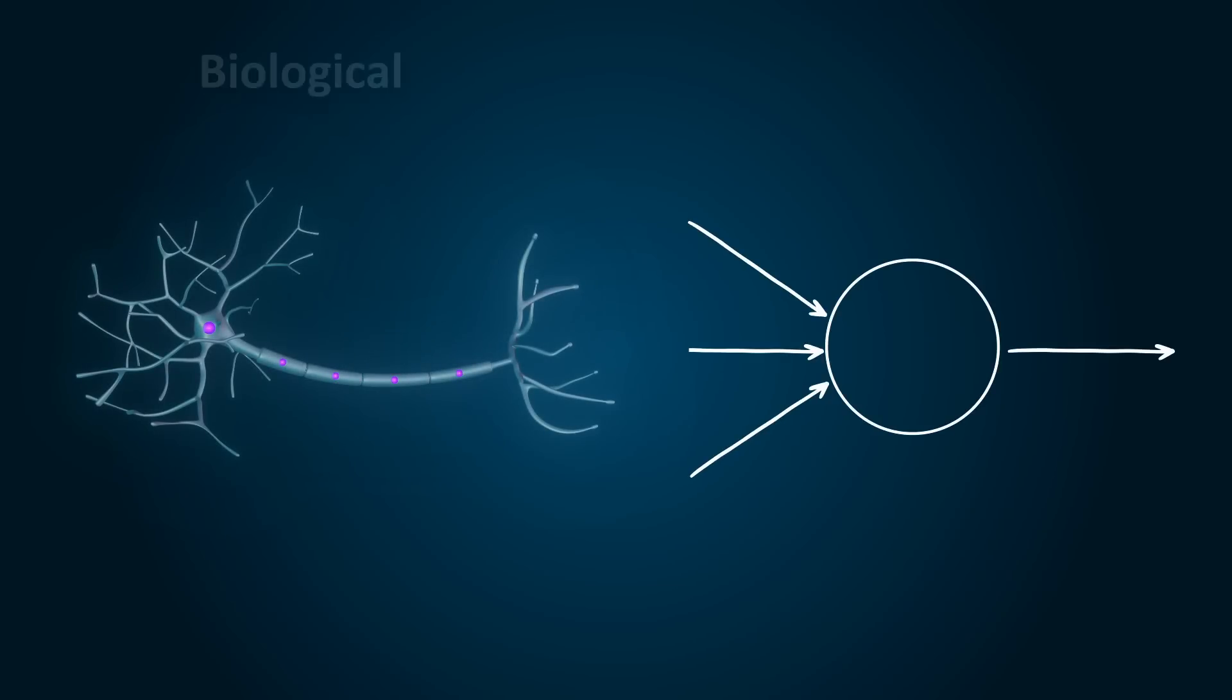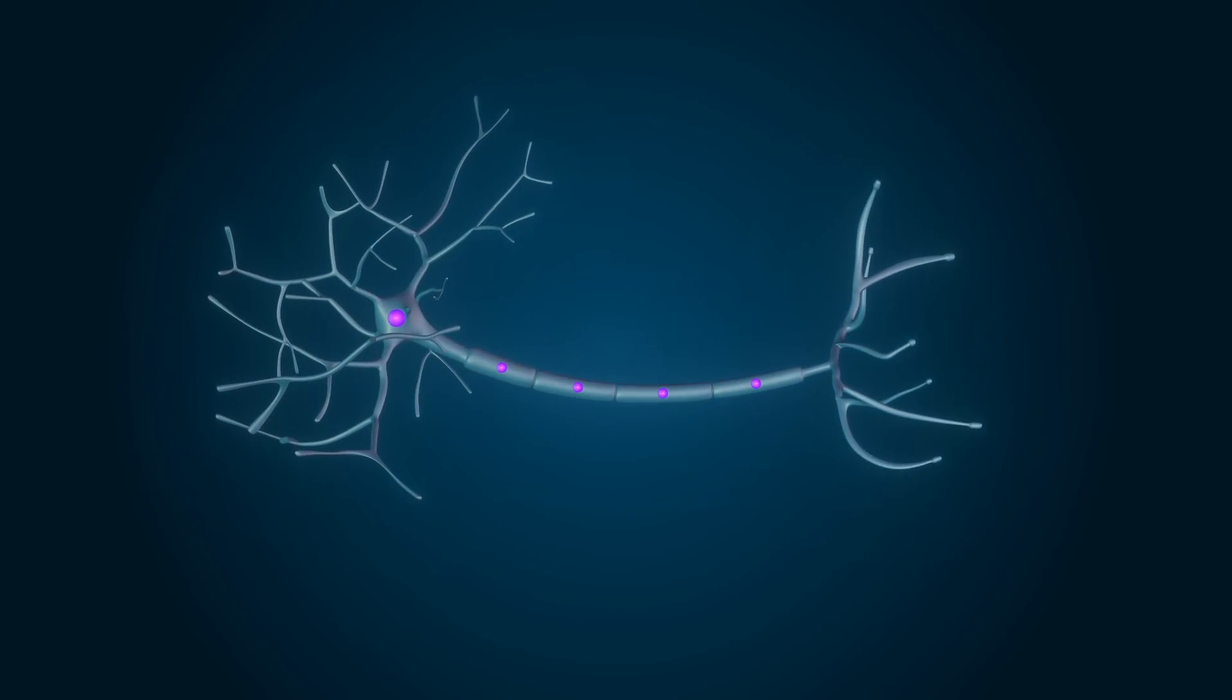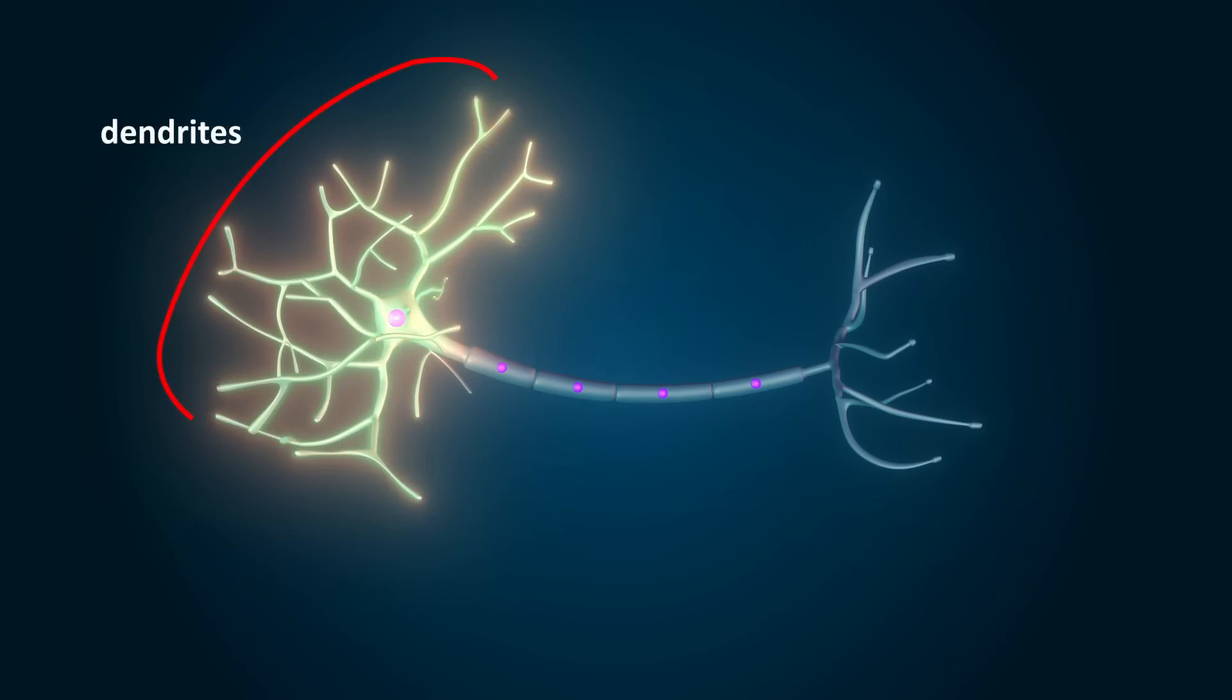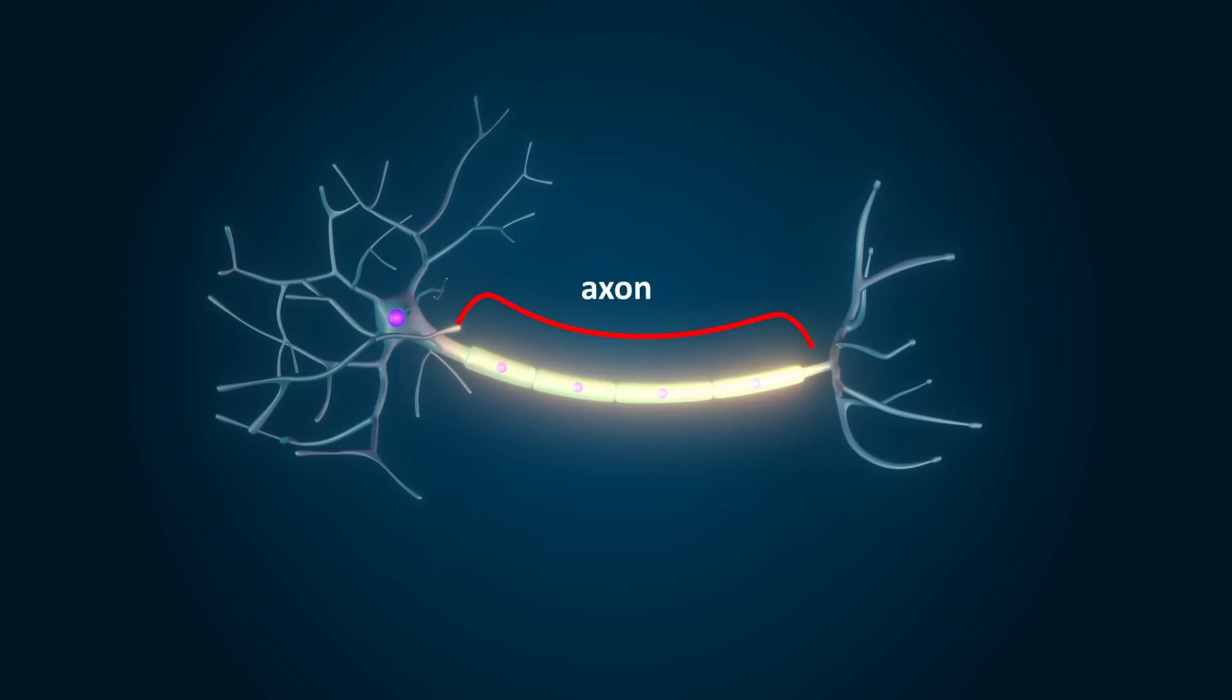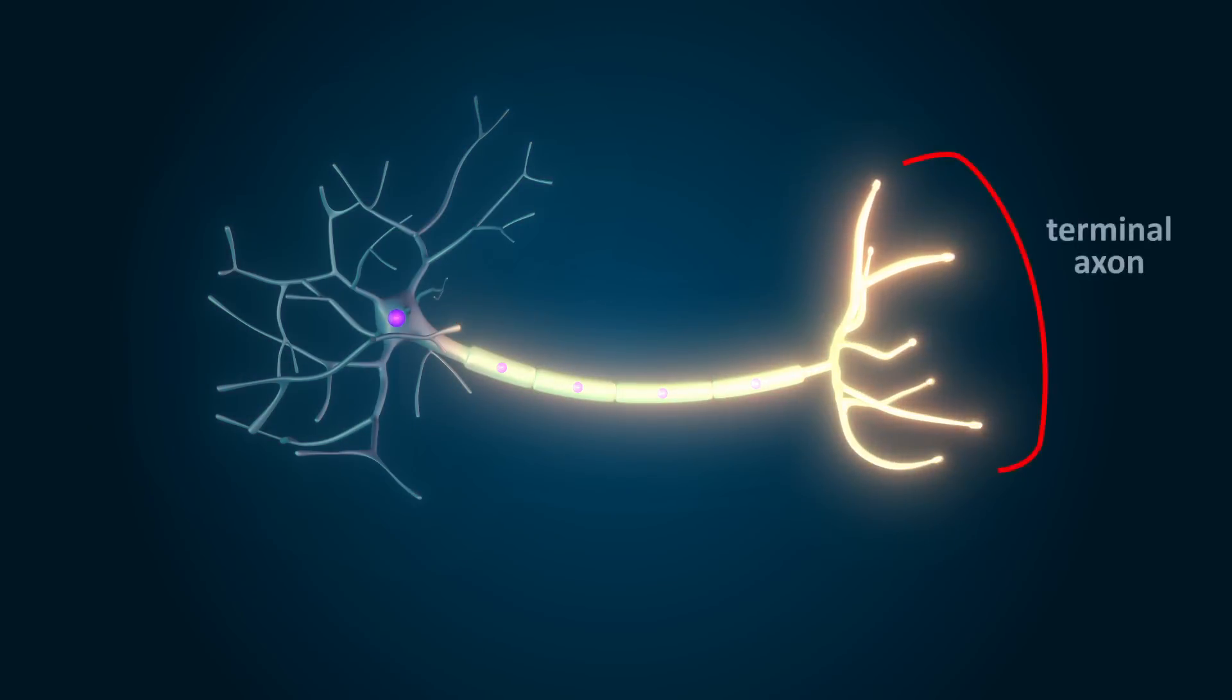If we continue the analogy a little further and look at a biological neuron and that in an artificial neural network, we see why it makes sense to draw this comparison. A biological neuron has a cell body with a nucleus. This is the core of the neuron where the processing takes place. Around the cell body, there are dendrites, which are signal receivers. They take in inputs, which the cell body can then process. On the other end, there is an axon, which ends with the terminal axons that can pass on a signal to the dendrites of the next neuron.